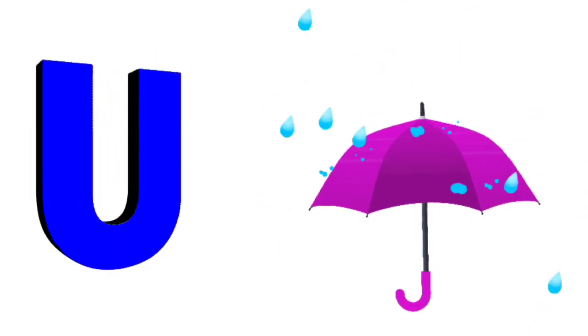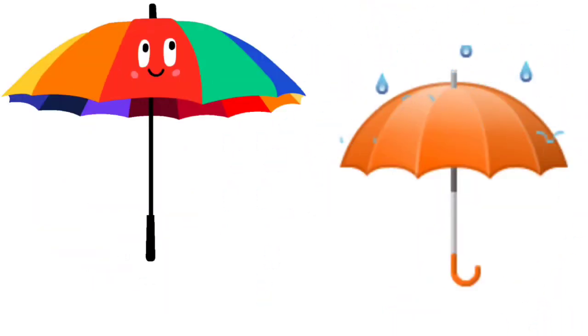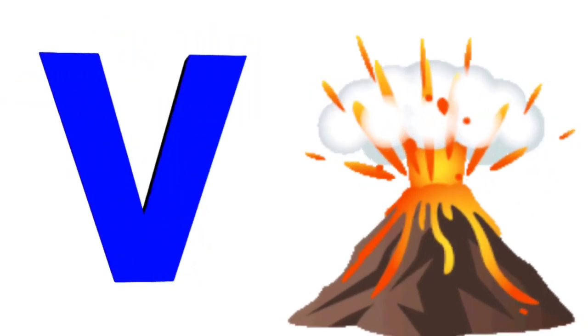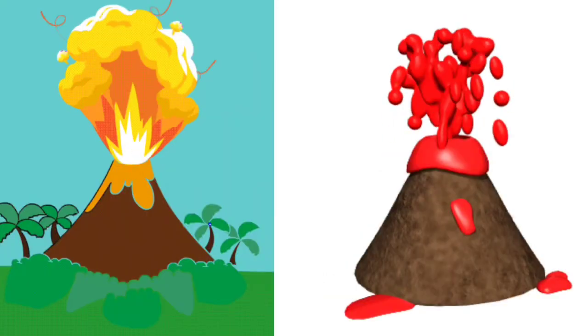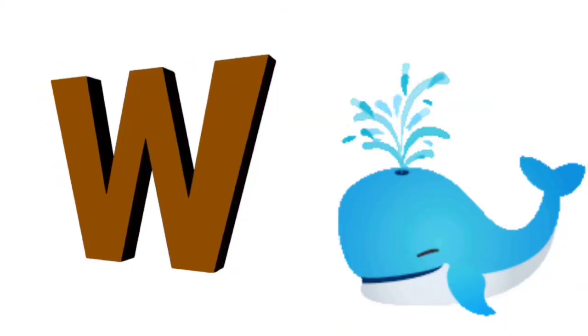U is for Umbrella. R, R. Umbrella. U is for Umbrella. R, R. V is for Volcano. V, V. Volcano. V is for Volcano. V, V.